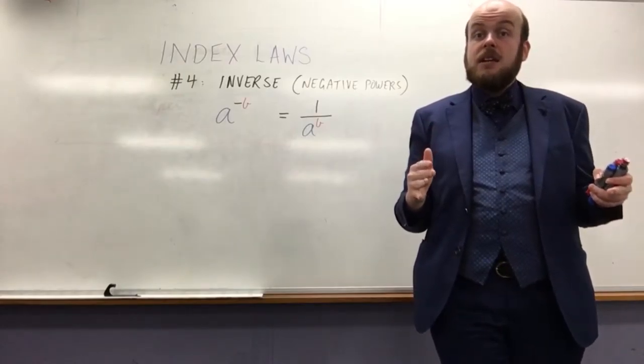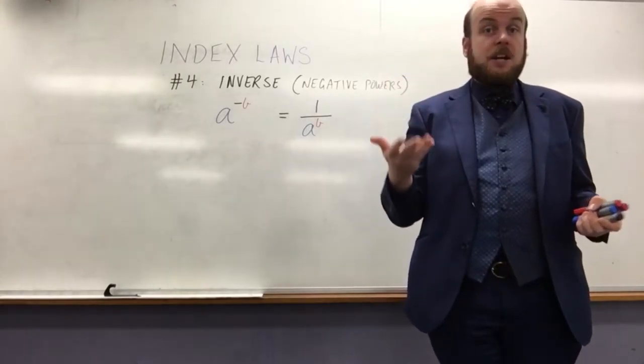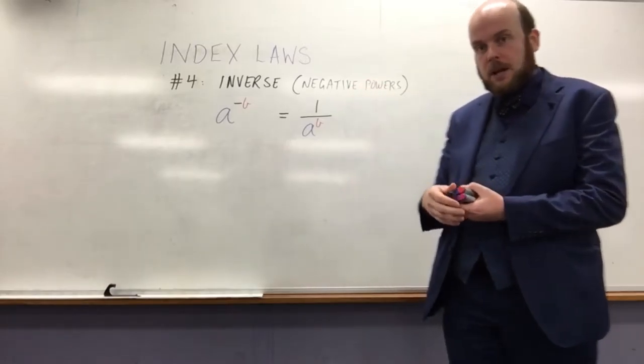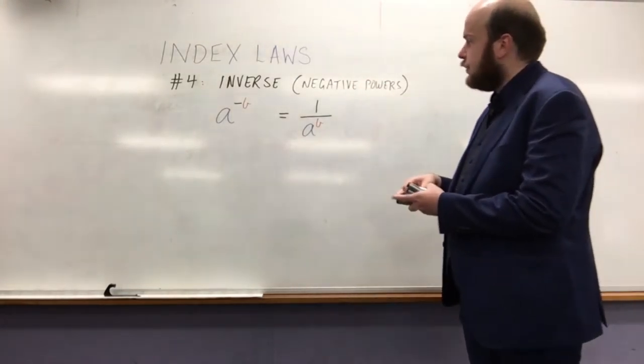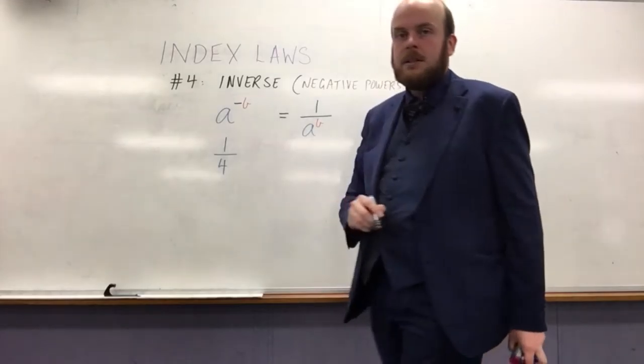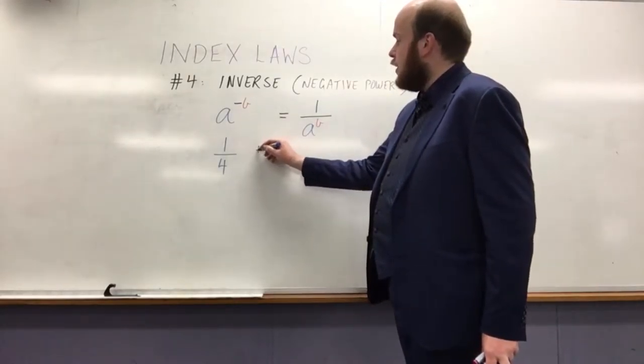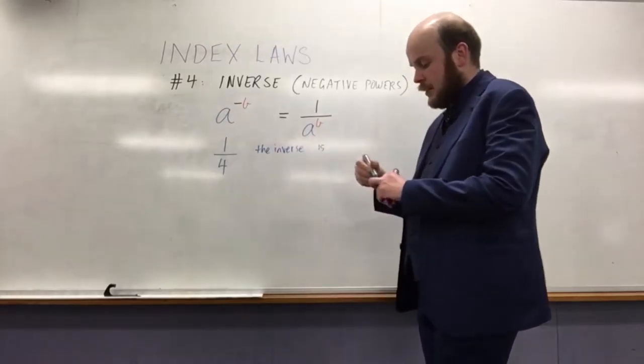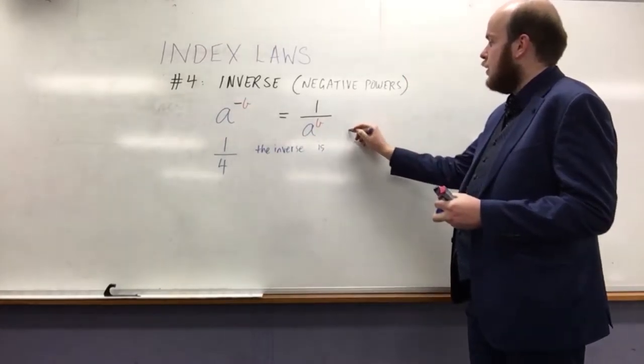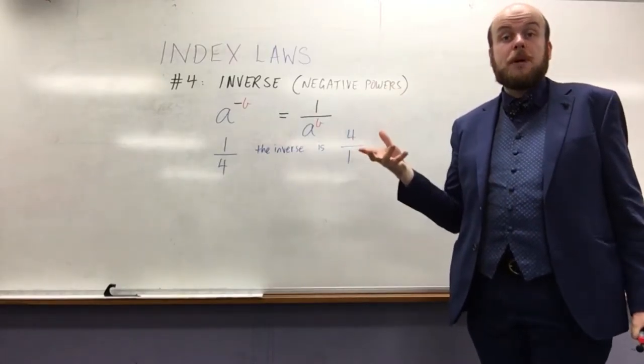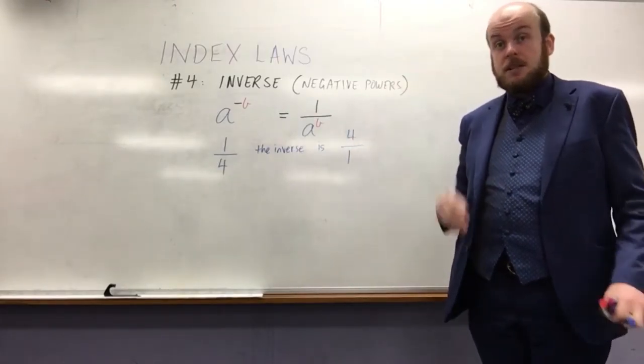Inverse more or less suggests that if I was to have a fraction, the numerator and the denominator would swap the other way around. So, for example, if I've got 1 quarter, the inverse is 4 over 1. The inverse is just swapping the numerator and the denominator.